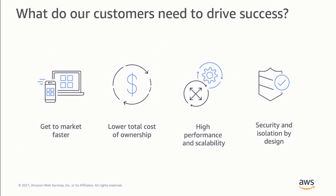Okay, let's start at the very beginning. Here at AWS, we like to think backwards from our customers. So we thought long and hard about what our customers need to drive success, and distilled it down to four core tenets. Agility is first on customers' minds. Our customers want to get to market faster. This means offloading as much undifferentiated work as possible, from infrastructure setup and configuration all the way down to boilerplate in their own code.